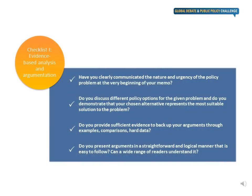To make sure that your memo has a convincing analysis based on evidence, it is helpful to answer four key questions. Have you clearly communicated the nature and urgency of the policy problem at the very beginning of your memo? It is very important that you address the tasks specifically mentioned for each scenario and explain what the key issues are. Do you discuss different policy options for the given problem, and do you demonstrate that your chosen alternative represents the most suitable solution? Do you provide sufficient evidence to back up your arguments through examples, comparisons and hard data? And finally, do you present arguments in a straightforward and logical manner that is easy to follow? Make sure not to use too technical language, so that a wide range of readers, particularly non-specialists, can understand it.